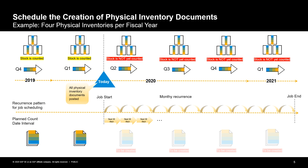In general, two conditions have to be fulfilled before a new physical inventory document can be created for a particular material in the system. First, a material document such as goods issue, goods receipt, or material movements has to be posted for the particular material. This means that a physical inventory document can also be created for a material with zero stock if a goods receipt was posted for the material before. You can check this condition with the Material Documents Overview app, which enables you to display a list of material document items and display the material document details of a selected material document item.